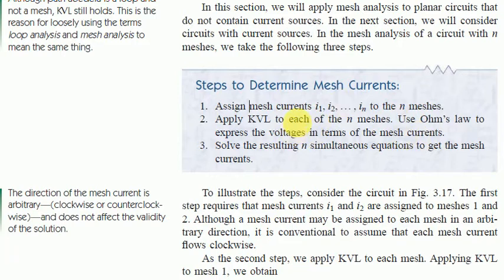Step 3: solve the n resulting simultaneous equations to get the mesh currents. When we express voltages using Ohm's law in current form, we get n equations for n meshes. We then solve them simultaneously by Cramer's rule or any method we know.